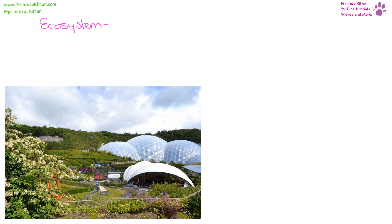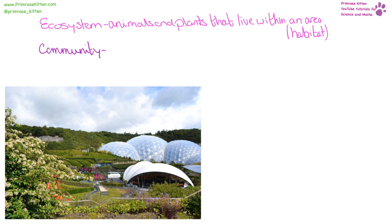An ecosystem includes the animals, plants, and everything living within a certain area — the community of plants and animals that live there. They are all dependent upon one another; they cannot survive without each other. For example, the animals eat the plants and can't survive without doing that, and the plants rely on the animals to distribute their seeds.